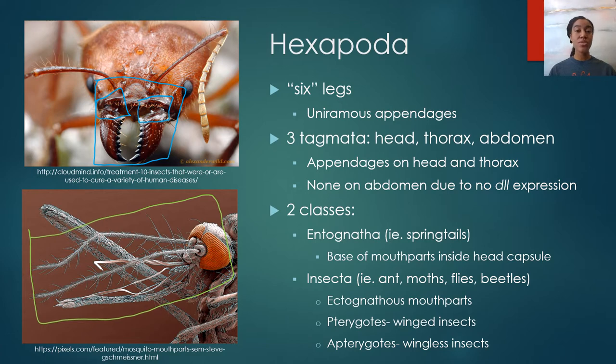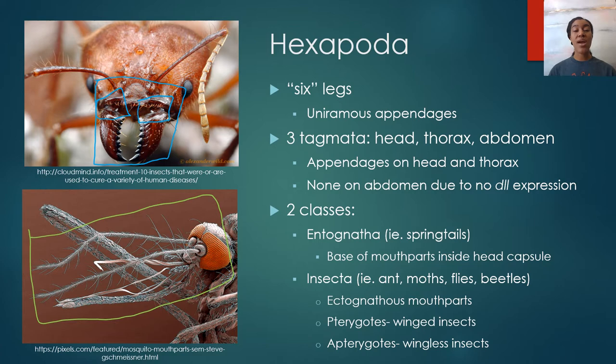There are two groups of insects: we have pterygotes, which are our winged insects, and then apterygotes, which are the wingless insects.